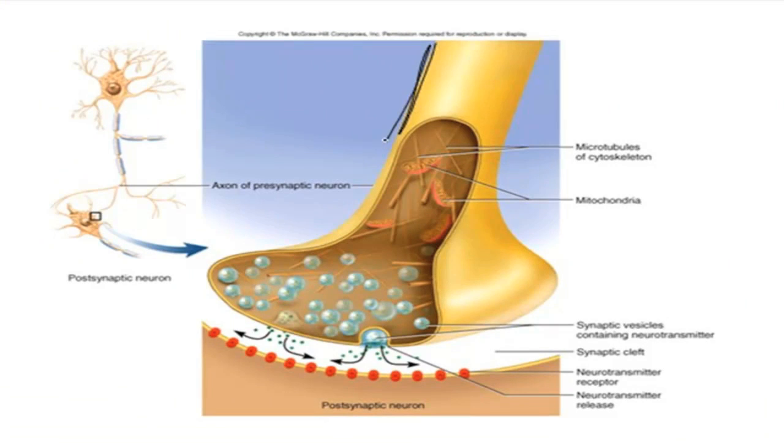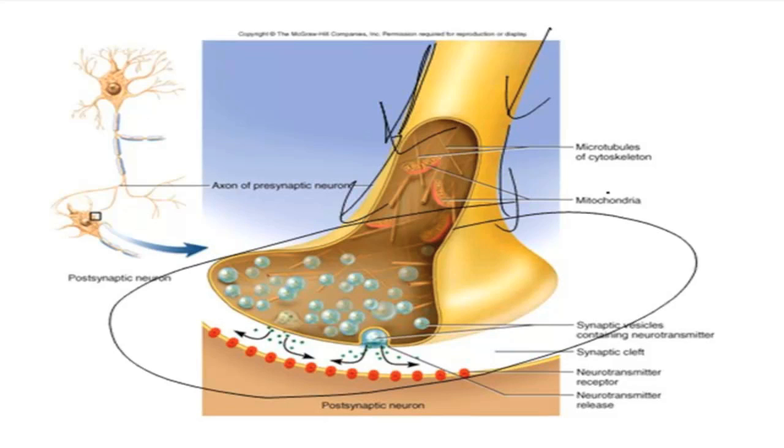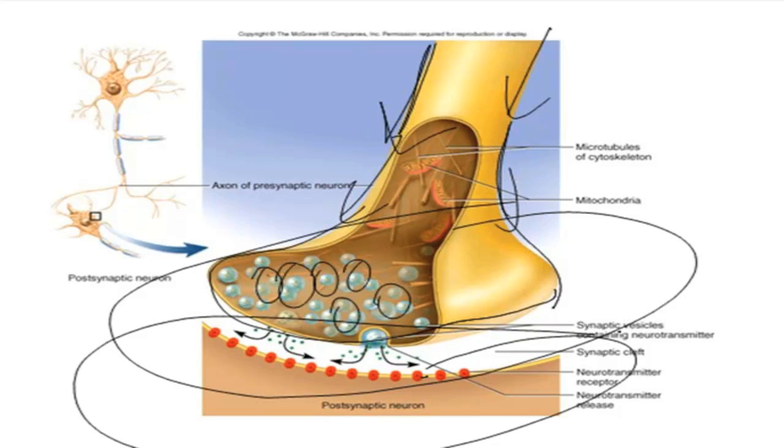The action potential travels down the membrane towards the synaptic end bulb or synaptic knob. You can see that inside that synaptic knob or end bulb are little tiny vesicles, all filled with chemicals called neurotransmitters. This synaptic end bulb is almost in contact with the next neuron that it's trying to communicate with. The site of communication between one neuron and another neuron is called a synapse.